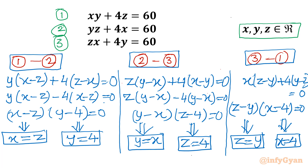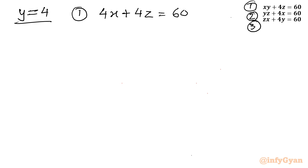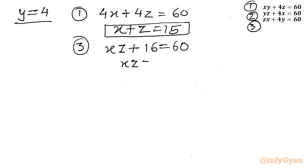So we will solve these three cases. Let me consider the first one: y equals 4. I will put y equals 4 in the original three equations. Equation 1 becomes 4x plus 4z equals 60, or dividing by 4: x plus z equals 15. Equation 2 becomes the same as equation 1. Putting y equals 4 in equation 3: xz plus 4 times 4 equals 60, so xz equals 44.